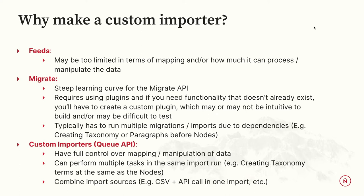With the Queue API, you have full control over mapping and data manipulation. It's very custom — in a good way and a bad way, I suppose. You can perform multiple tasks in the same run. For example, if you want to create taxonomy terms and nodes simultaneously, you can do that — you don't necessarily have to do one and then the other, whereas you're kind of forced to in migrations.